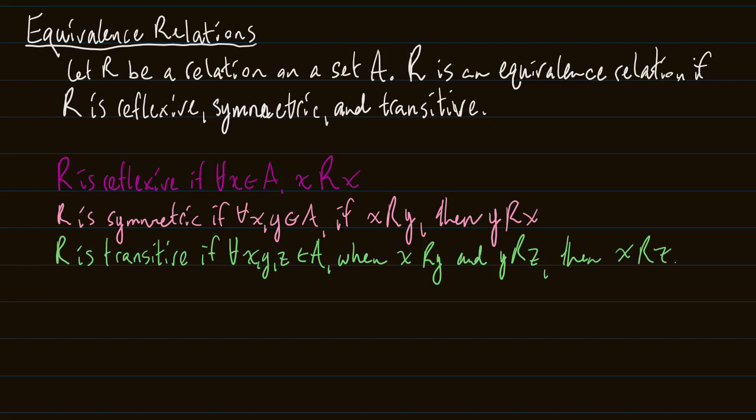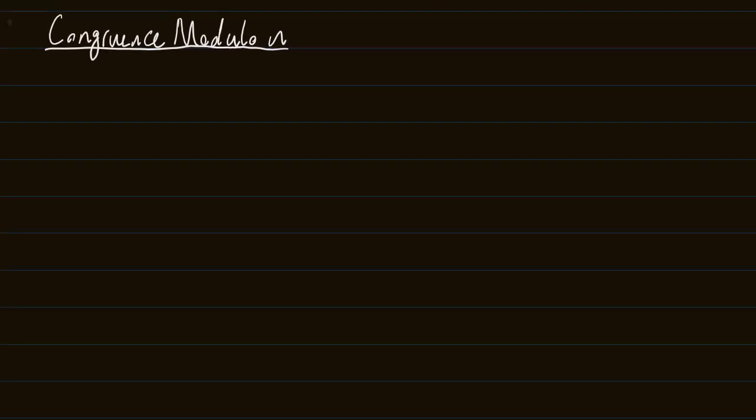What I want to do is talk about a new kind of relation. It's something that's going to keep coming up in classes like number theory and abstract algebra — a kind of relation you'll see for the rest of your mathematical career. What we're going to talk about now is congruence modulo N. Has anyone ever heard of modular arithmetic? I definitely had not before taking discrete math, but it's actually pretty cool.